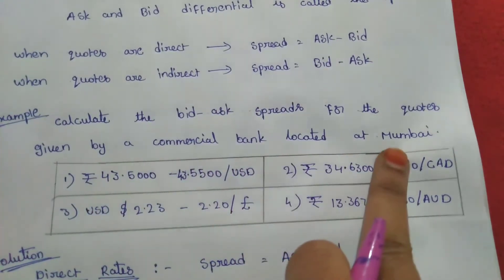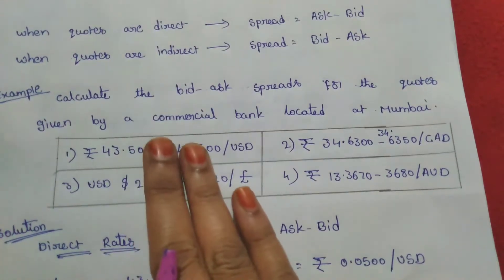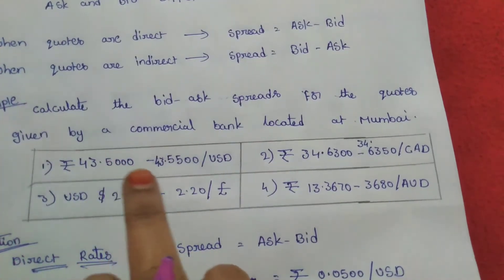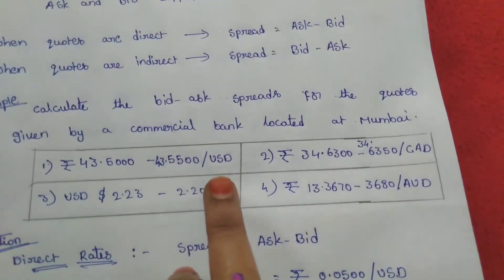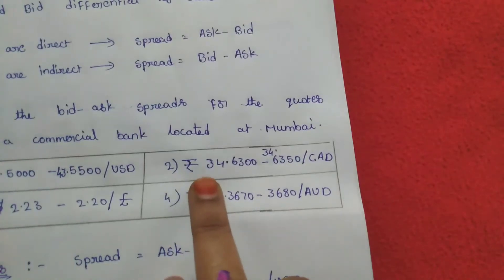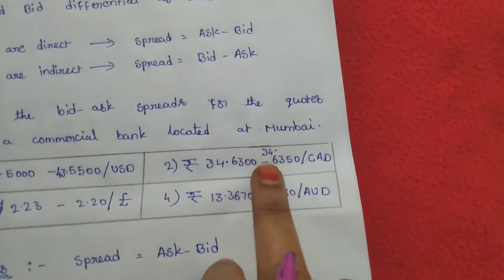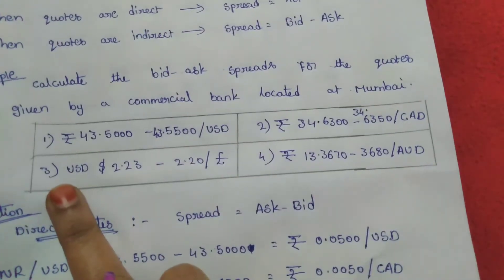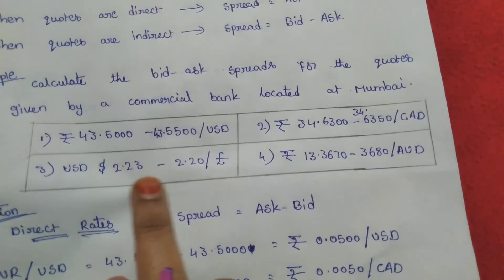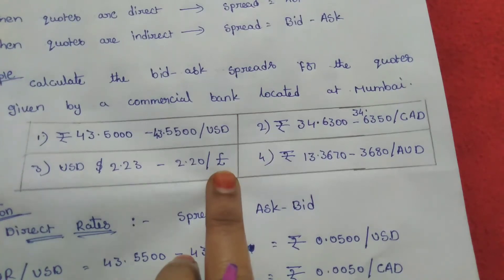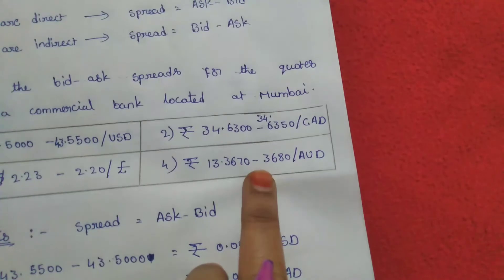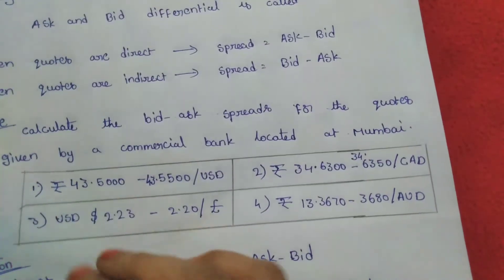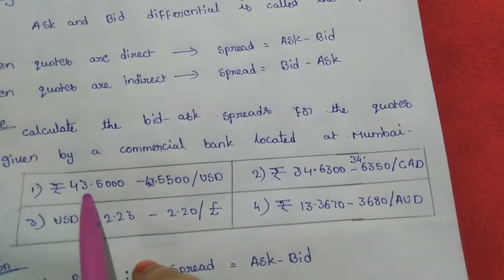Here is an example: calculate the bid-ask spreads for the quotes given by a commercial bank located at Mumbai. The four quotations are: (1) 43.5000 and 43.5500 rupees per US dollar; (2) 34.6300 and 34.6350 rupees per one unit of Canadian dollar; (3) US dollars 2.23 and 2.20 per one unit of British pound; (4) 36.3670 and 36.3680 rupees for one unit of Australian dollar.